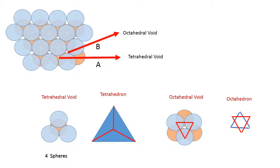An octahedron basically means that there are two triangular voids placed one above the other, with one triangle having an apex which is opposite to that of the other triangle. So we have a blue color triangle having the apex upwards and then we have the red color triangle which has the apex downwards. What we get is an octahedral void and it consists of 6 spheres.